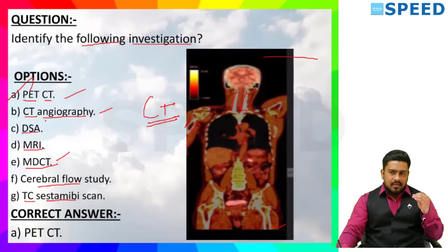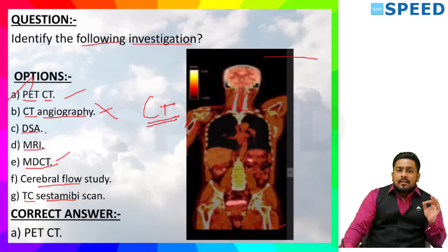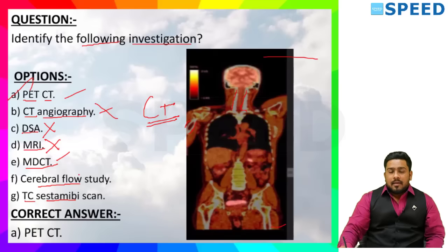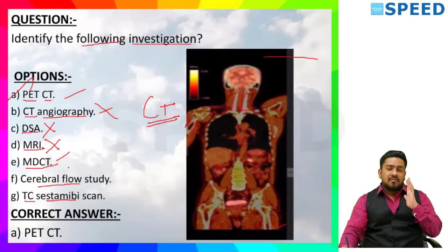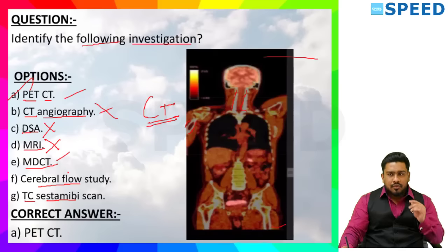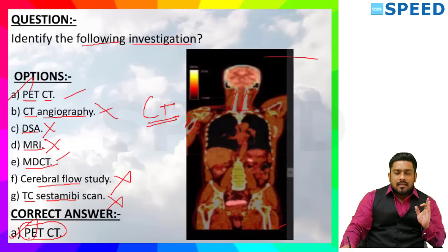CT angiography is a CT scan study of vessels — it will show us the vessel only, mainly. That is not this option. Digital subtraction angiography images would not look like this. It is not MRI because the bony cortex is white here — bony cortex appears black in MRI. This is not a multi-detector CT image; MD CT is plain CT. The technology used in CT is multi-detector, but it produces a plain CT image. This is a classical case of a PET CT fusion image.